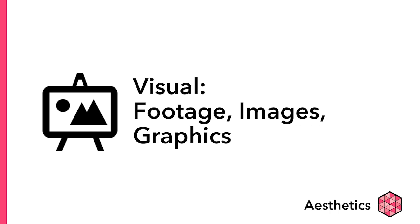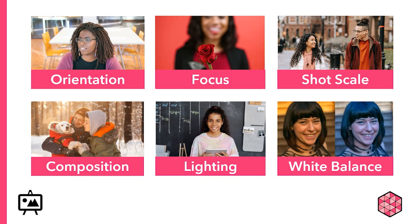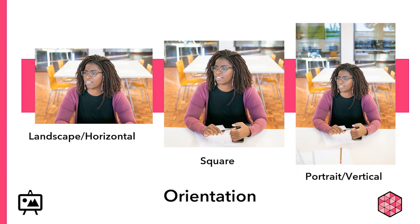So let's start with the visual. In the visual section, we'll cover orientation, focus, shot scale, composition, lighting, and white balance. When you're filming, the first thing to consider is what kind of aspect ratio and orientation you will choose. Notice how the orientation you choose changes what is visible within your frame, and thus what your frame will convey to the viewer.